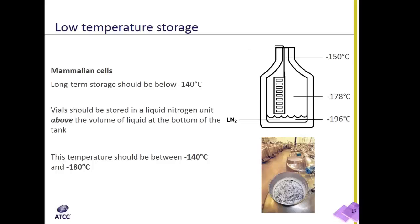Vapor phase systems create a vertical temperature gradient within the container. At the bottom, the liquid nitrogen will maintain a temperature of around minus 196 degrees Celsius. The temperature of the vapor phase decreases as it reaches the top portion of the container.